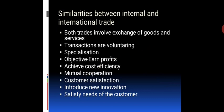Now let us discuss the similarities between internal and international trade. Both trades involve exchange of goods and services. Transactions are voluntary and both involve specialization — for example, India is an agricultural country, so we are specialized in agricultural commodities such as rice, wheat, etc. The important objectives for both trades are to earn profits and achieve cost efficiency.